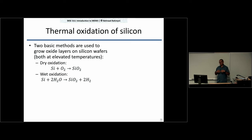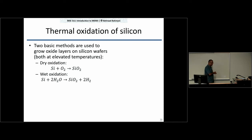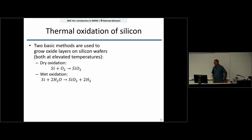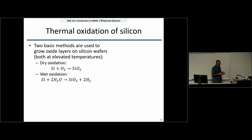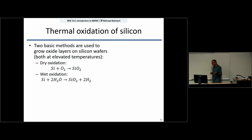You can also do wet oxidation, where water vapor is present in the furnace. The process is still carried out at about 800 to 1100 degrees Celsius — you don't actually have liquid water but water vapor, hence the term 'wet.' Water vapor is brought to the silicon surface, silicon reacts with oxygen from the water to form silicon dioxide, and hydrogen leaves the chamber.